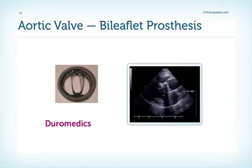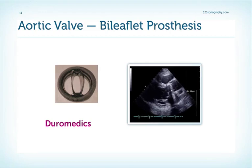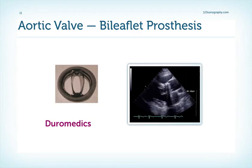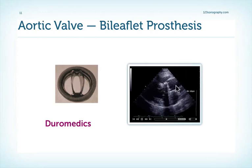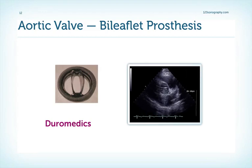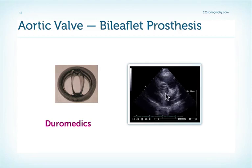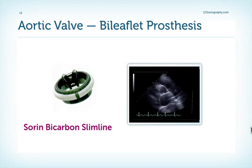Now let's turn to prosthetic valves in the aortic position. In general, it's quite easy to differentiate between biological and mechanical valves, but it's very difficult to say which mechanical valve we actually have. This is an example of a Duramedics bi-leaflet mechanical valve in the aortic position, as seen from a parasternal long axis view. All you can see here is a lot of shadowing, and those shadows also obscure the view to the prosthetic valve itself, so we cannot really see the leaflets.